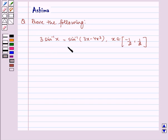3 sine inverse x equals sine inverse of 3x minus 4x cube, where x belongs to the closed interval from minus 1/2 to 1/2.